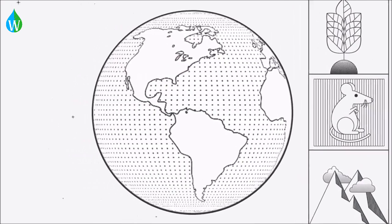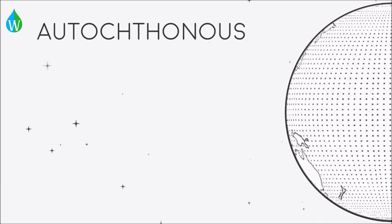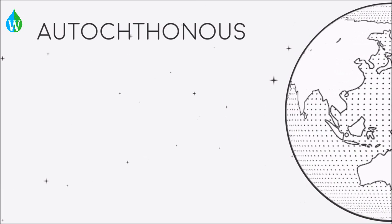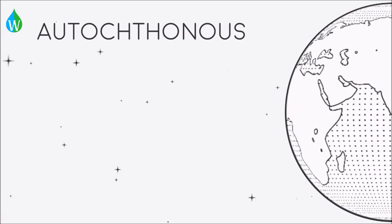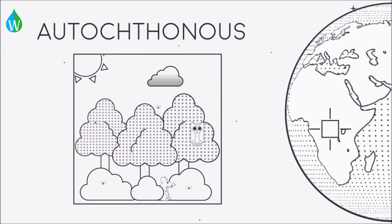Generally, natural ecosystems have what are called autochthonous resource inputs. It is just a scientific way of saying that most, if not all, of the components found within an ecosystem are indigenous or native to that area.